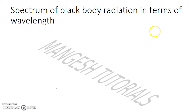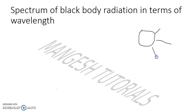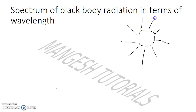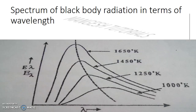When considering a blackbody giving out energy in the form of electromagnetic waves having a wide range of wavelengths, the energy is not equally distributed over these wavelengths — different wavelengths have different energy.